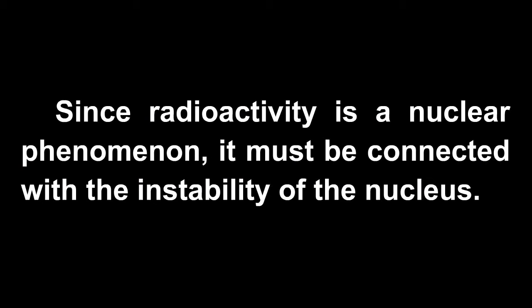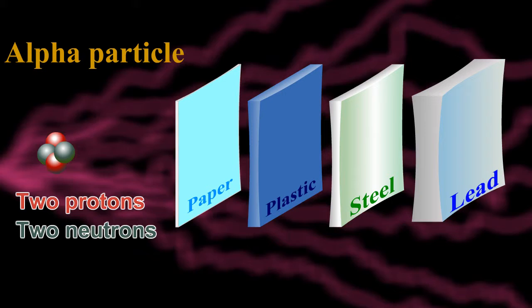An alpha particle is equal to the bundle of two protons and two neutrons, and hence it is equal to the helium nucleus.